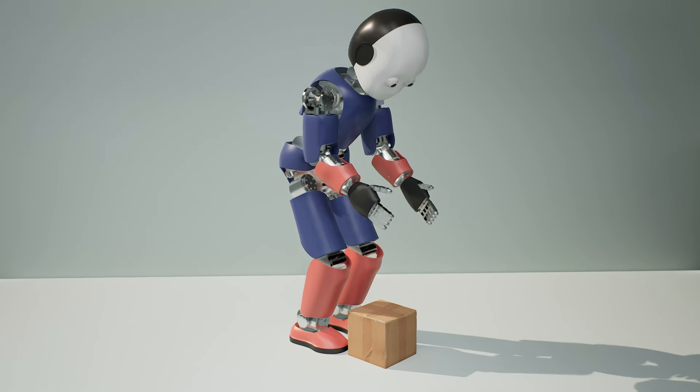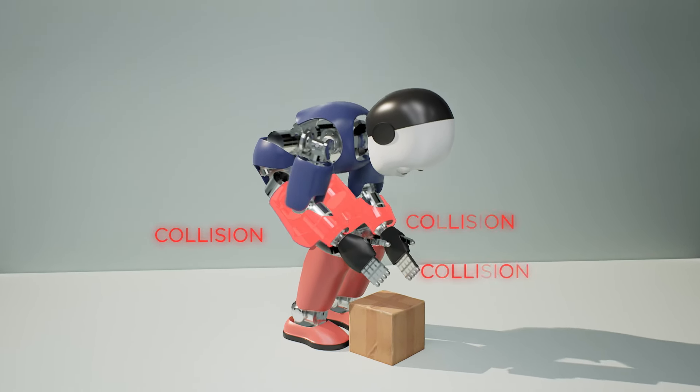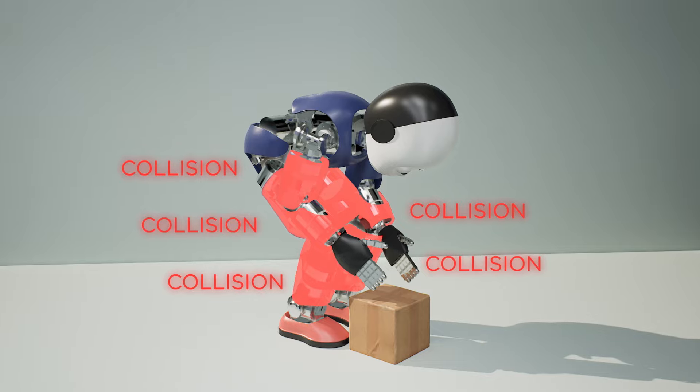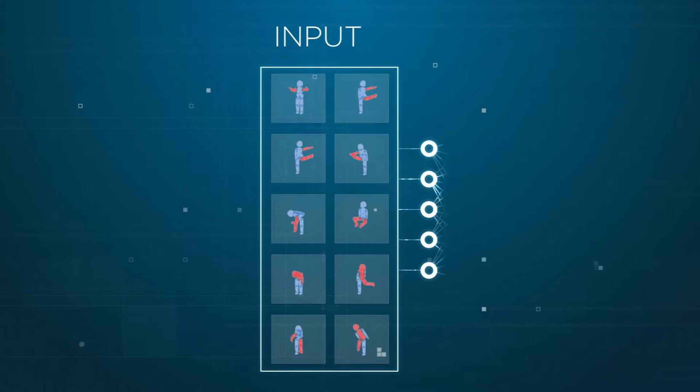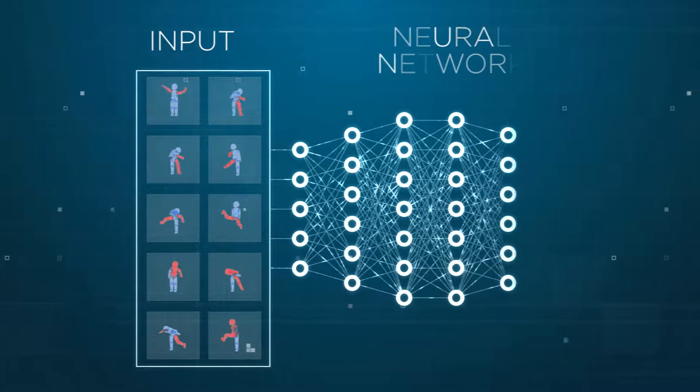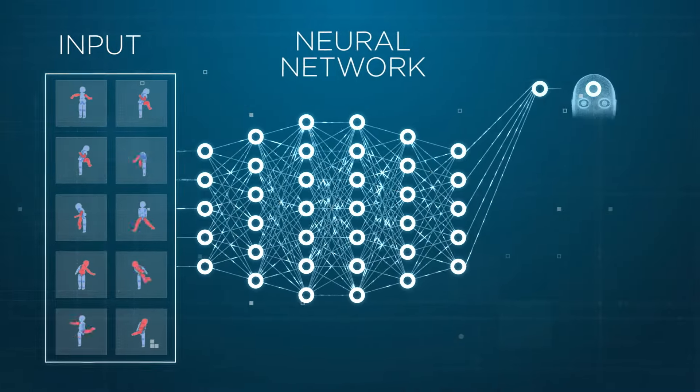It becomes even harder with a humanoid robot counting over 30 actuators. While performing tasks, self-collision risk increases, for example, when bending down, as the elbow is often at risk of hitting the knee.